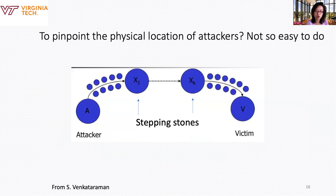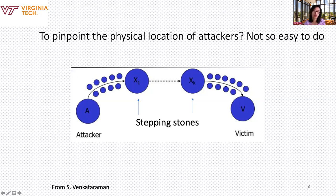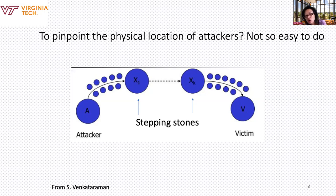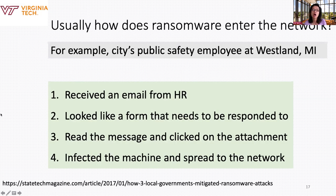When you graduate and work for an organization, make sure someone is backing up data. It is often very difficult to pinpoint the physical location of attackers, because the first thing an attacker does is use a stepping stone — instead of their real IP address, they log into a victim computer they control or use a VPN service to hide their real IP. That's how ransomware typically enters a network — phishing is the usual initial infection path.